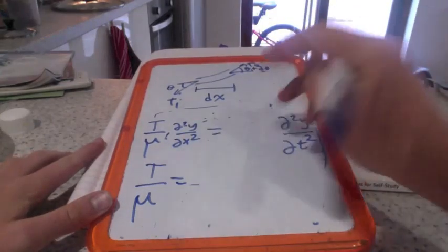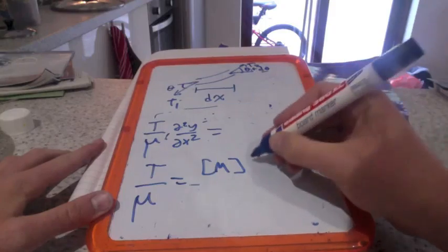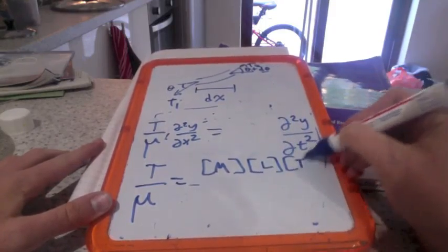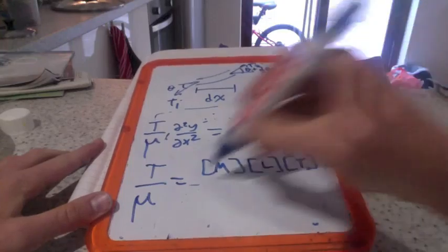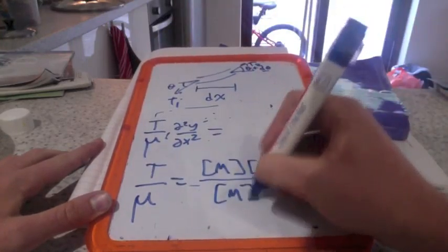Tension you can think of as a force—that's mass times acceleration by Newton again. I could write it out in terms of dimensions. We've defined this as mass per unit length.